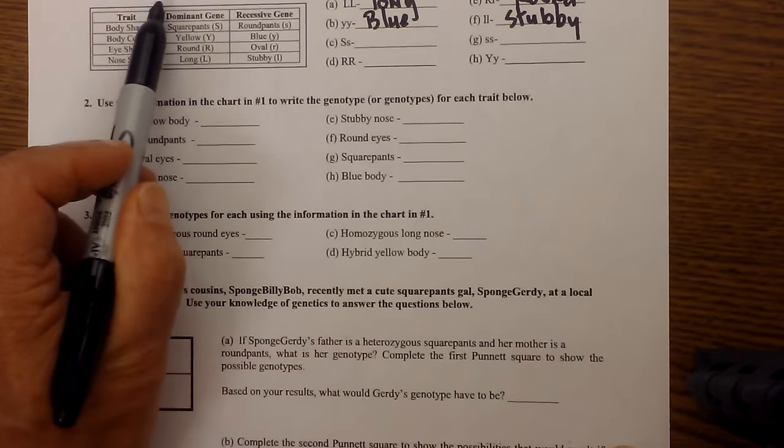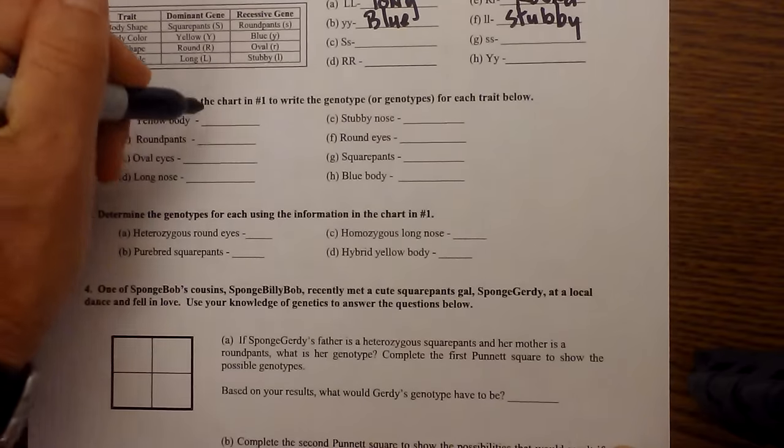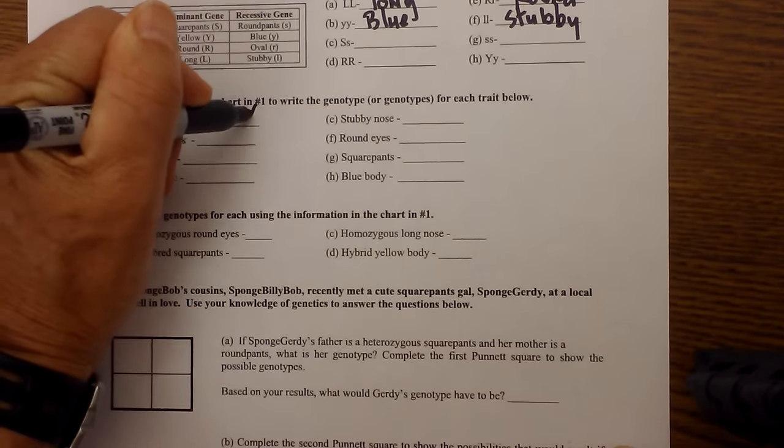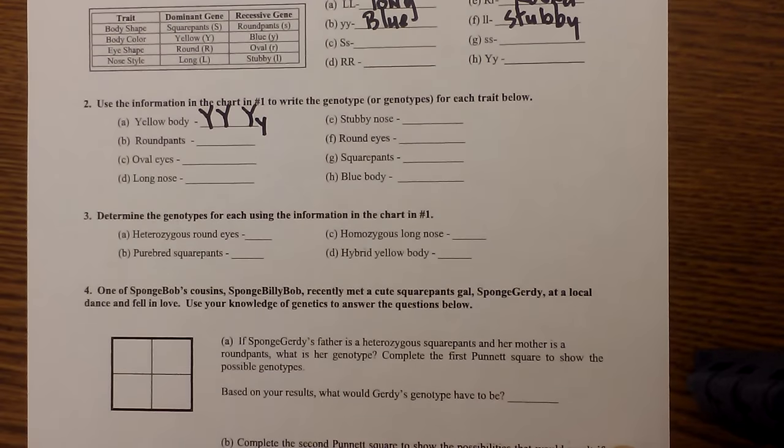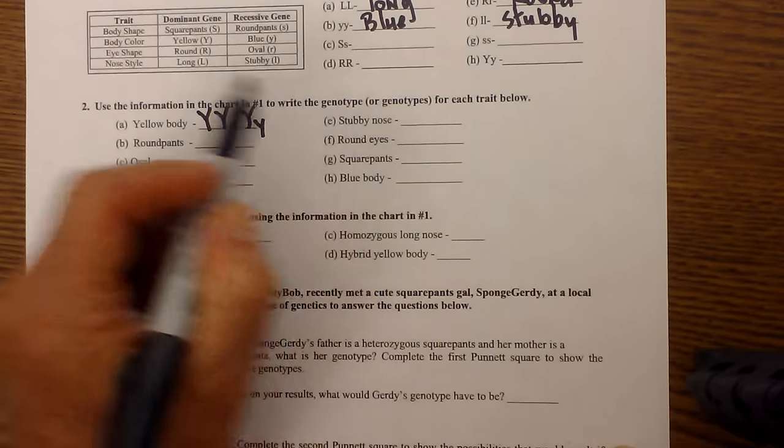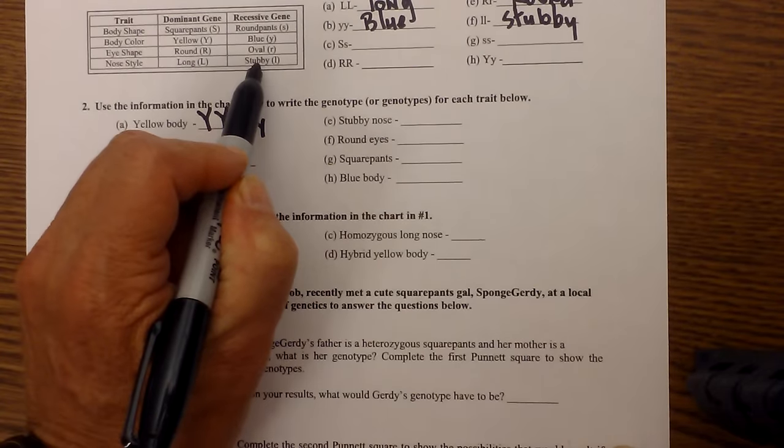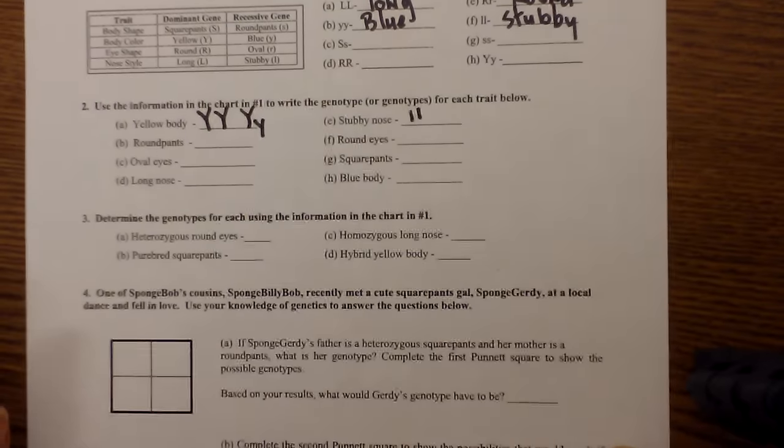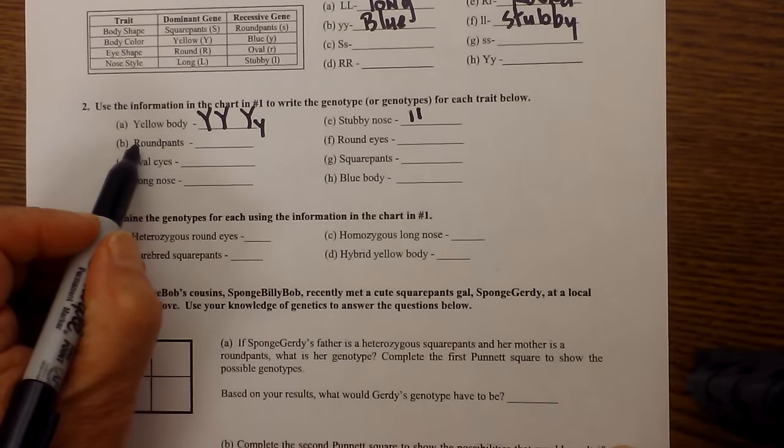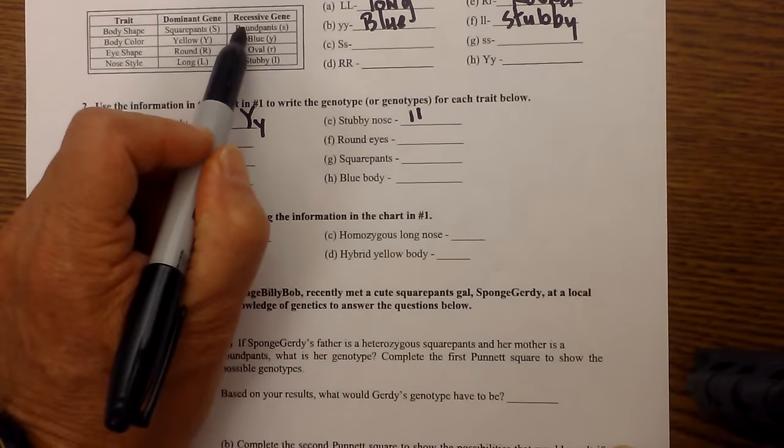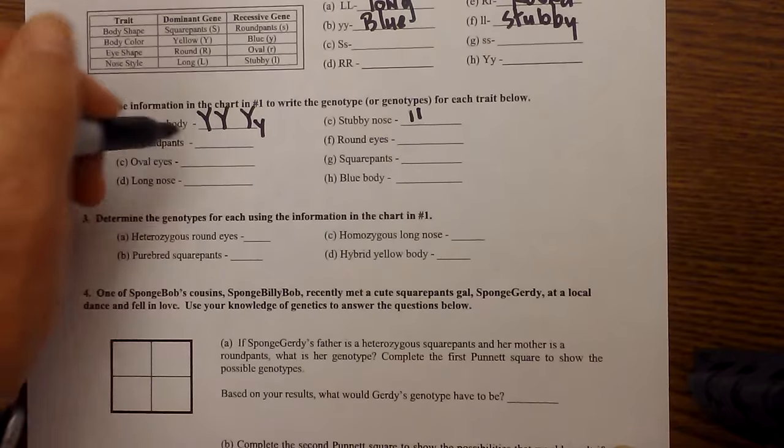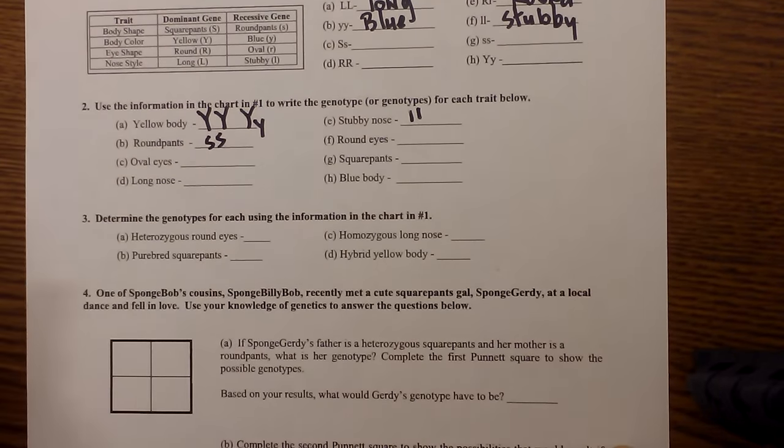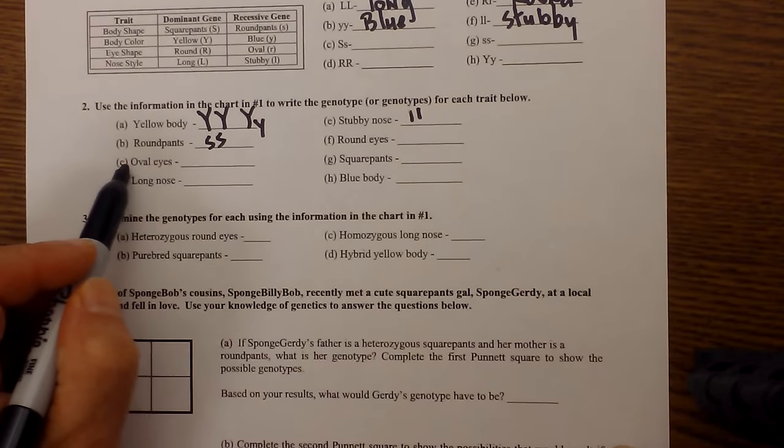so it can be written capital Y, capital Y which is homozygous or capital Y lowercase. Stubby nose, stubby nose is recessive. So there's only one way to write it and that is homozygous two lowercase l's. Round pants, round pants are also recessive. So we need to write a homozygous recessive genotype. And let's go ahead and do one more.